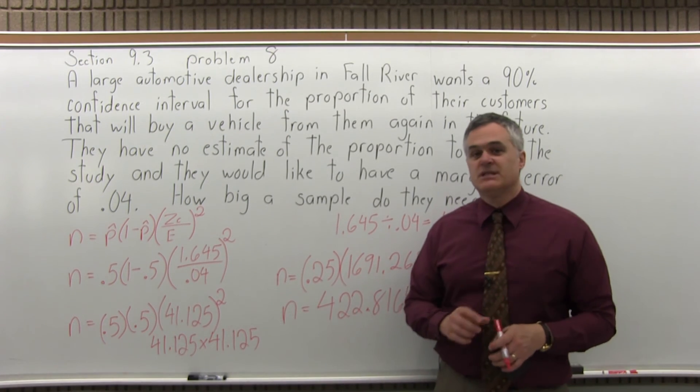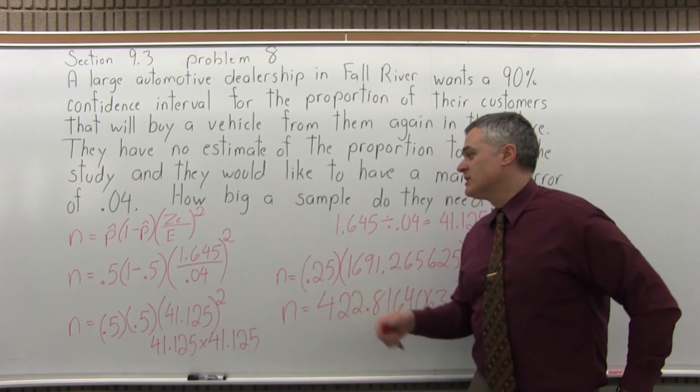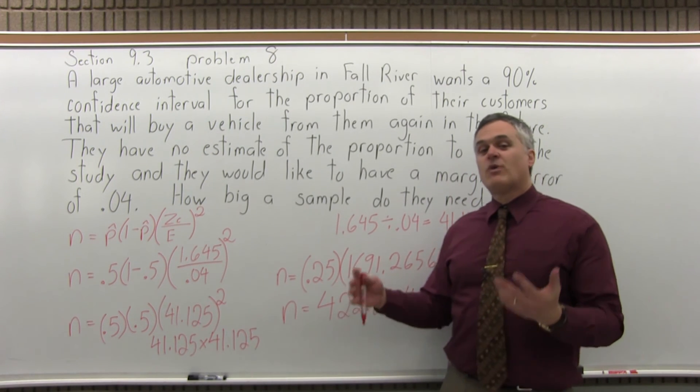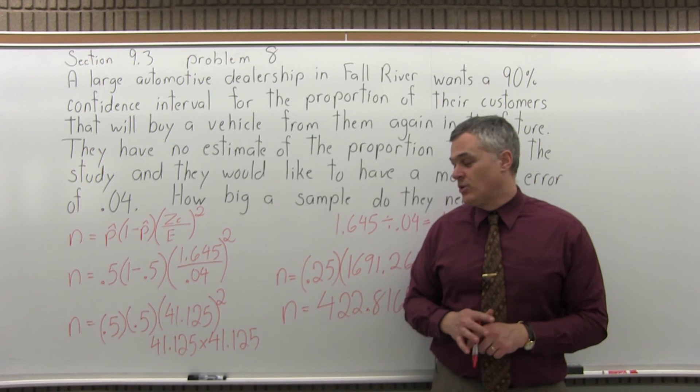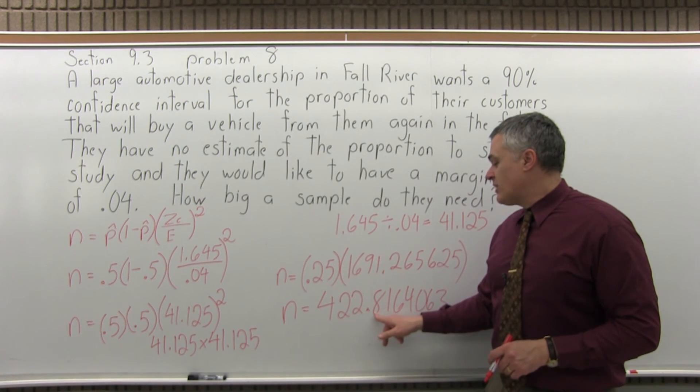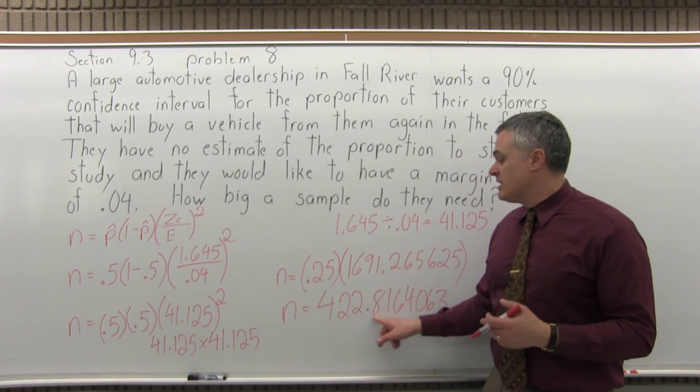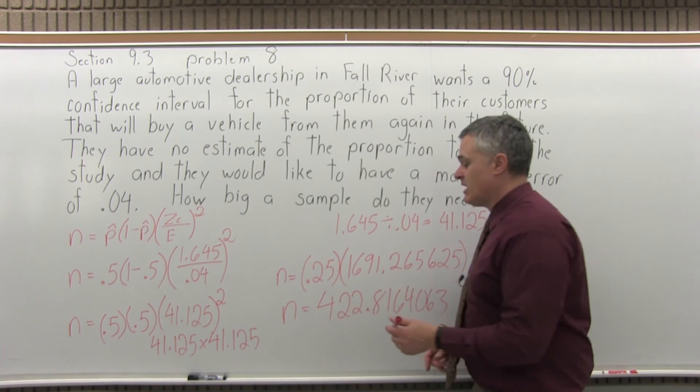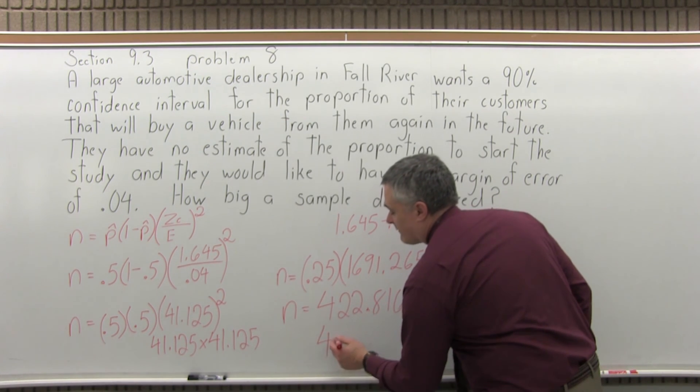Now the notes for this section say that when you use to determine the sample size formula and you get a decimal result, you always want to round up to the next biggest whole number. So 422.8 would ordinarily round up anyway. But even if it was say 422.3, you'd still bring it up to the next nearest whole number. So my final answer is 423.